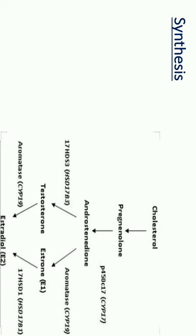Estrogen is a C18 steroid and its half-life is 30 to 60 minutes. In non-pregnant women, estrogen is secreted in larger quantity by the theca interna cells and in smaller quantity by the corpus luteum of the ovary. But in pregnant women, the larger amount is secreted by the placenta. The most potent form is estradiol, and its plasma level during the follicular phase is around 30 to 200 picograms per ml.